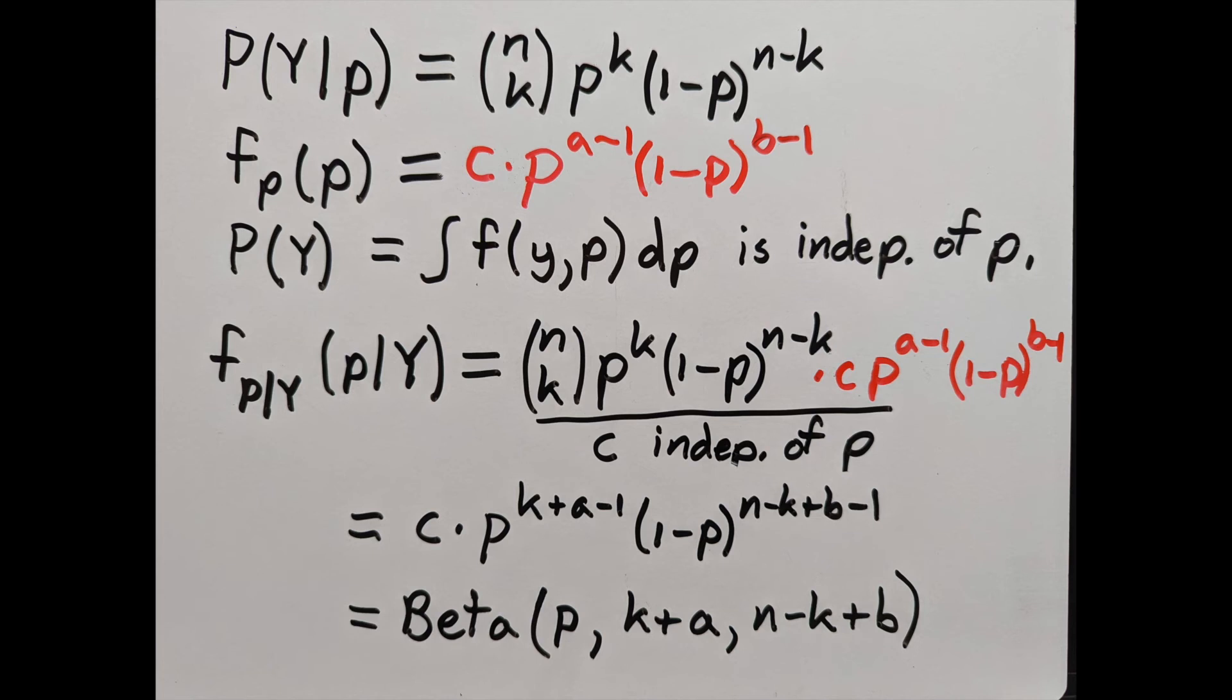When we plug that into Bayes' rule, you can see we get powers of p that combine, and powers of 1 minus p that combine, and everything else is constants, which means, again, it's a beta distribution. That's why we say that the beta distribution is conjugate for the binomial. If you start with a beta, you end with a beta.